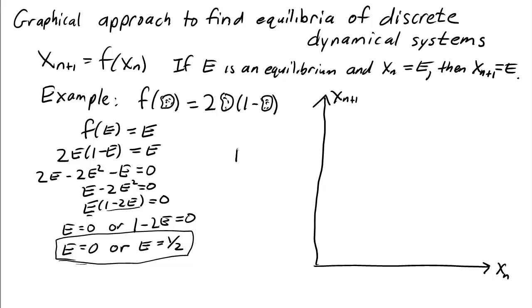Let's plot two things. First, we'll plot the updating function x_{n+1} = f(x_n). For this function, the function will be a parabola opening downward.